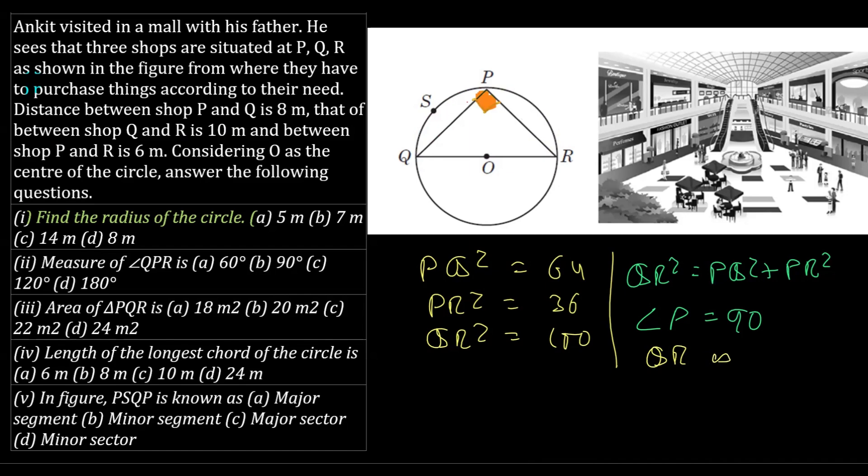QR is a diameter. If QR is a diameter, therefore the length of QR, which is how much? QR is 10, right? That's what mentioned in the question. QR is 10 centimetre. QR is 10 implies the radius is what? Half of the diameter, which is 5 centimetre. We got the first part and the correct answer is this.